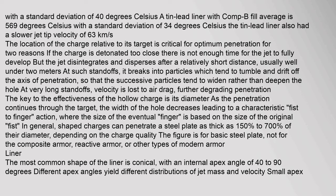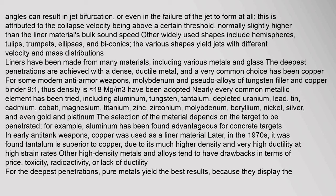Certain angles can result in jet bifurcation, or even in the failure of the jet to form at all. This is attributed to the collapse velocity being above a certain threshold, normally slightly higher than the liner material's bulk sound speed. Other widely used shapes include hemispheres, tulips, trumpets, ellipses, and biconics. The various shapes yield jets with different velocity and mass distributions.